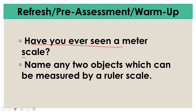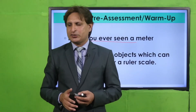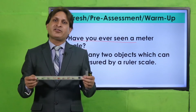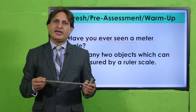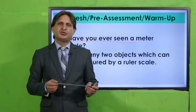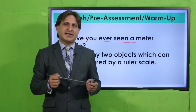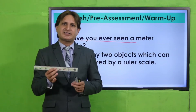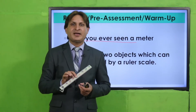Have you ever seen a meter scale? Jaisa ke aap logon ko maine bataya tha, aapke geometry box mein ya aapke bag mein ek centimeter scale pada hota hai. Isi tarah ek long scale hota hai — jo bada scale hota hai — mostly aap logon ke gharon mein hoga, ya jo wood cutter hote hain unke paas hota hai, jisko hum log meter scale kehte hain. Aur uske upar bhi centimeter likhe hue hote hain, jaisa is scale ke upar centimeter likhe hue hain jo aapke geometry box aur bag mein available hain.